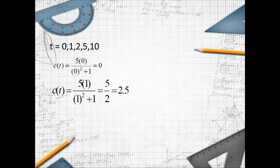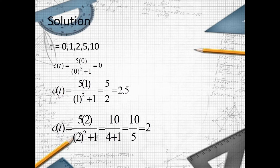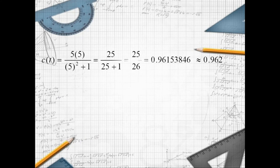At t equals 1, c of t equals 5 over 2, which equals 2.5. At t equals 2, c of t equals 5 times 2 over 2 squared plus 1, which is 10 over 5, equals 2. At t equals 5, c of t equals 5 times 5 over 5 squared plus 1, which is 25 over 26.